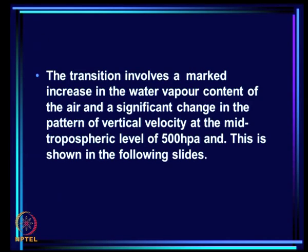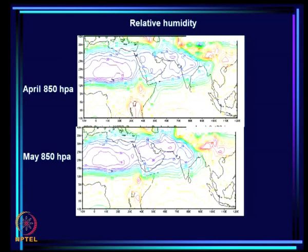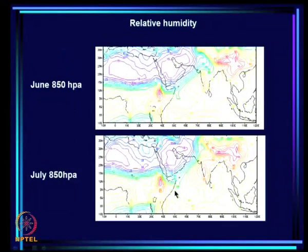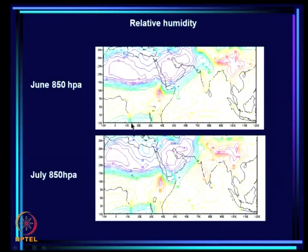The transition also involves a marked increase in water vapor content of the air and a significant change in the pattern of vertical velocity at the mid-tropospheric level of 500 hPa. The relative humidity, which was high only near the equatorial region in April, shifts in May. By June the humid belt has come over India, and by July it is much more humid over the region — except the heat low region, which continues to be dry.